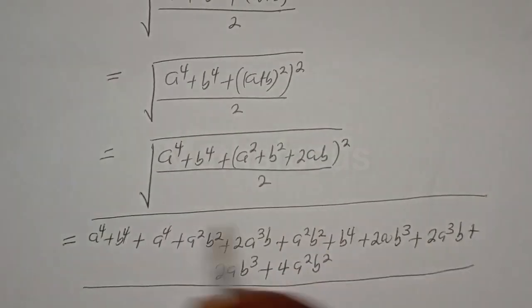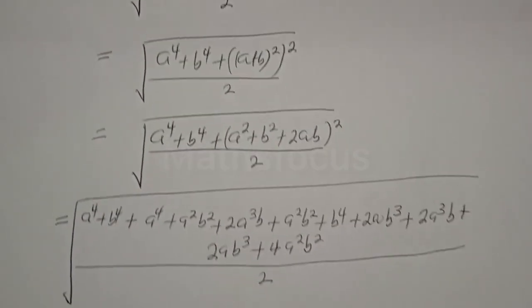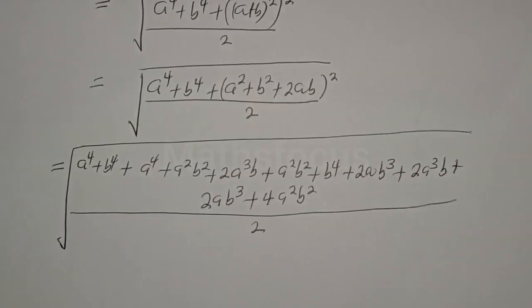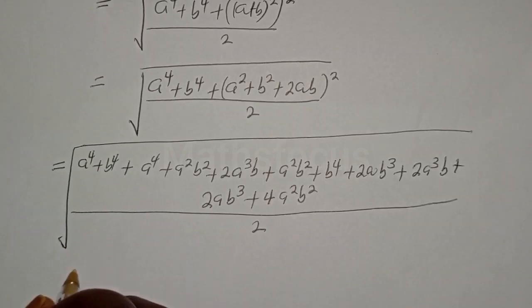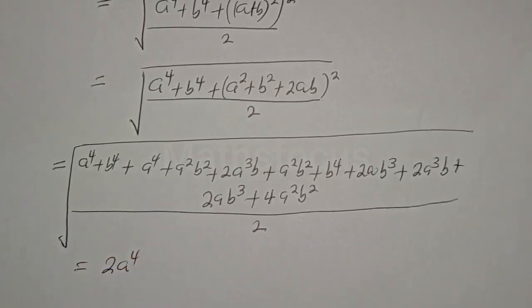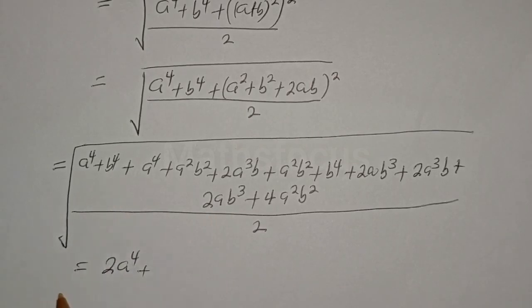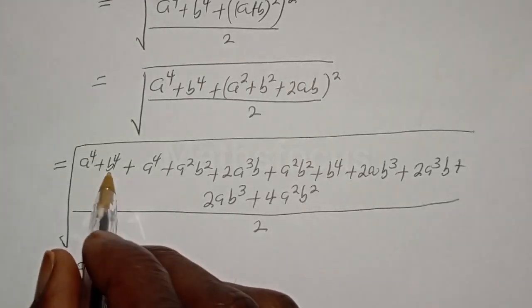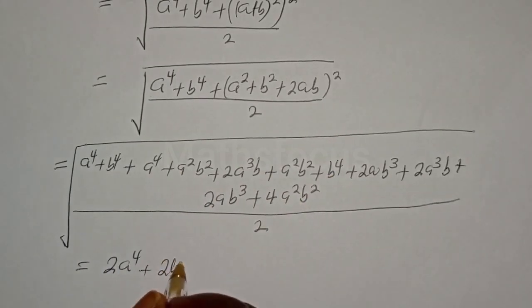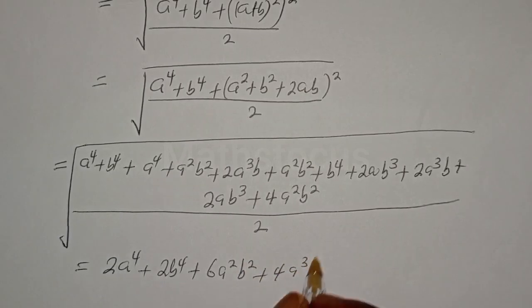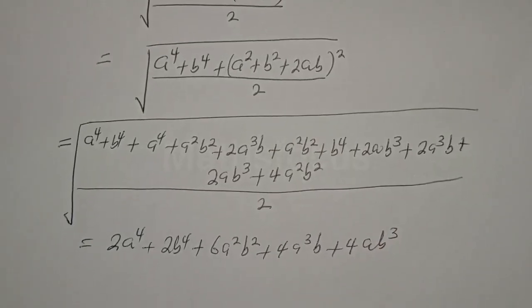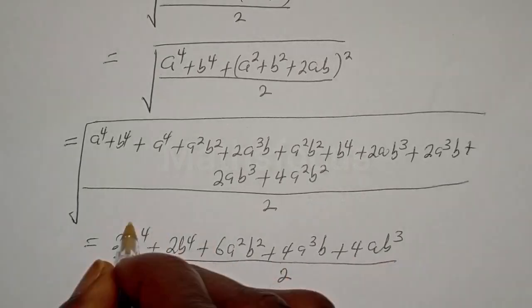From the full expansion we collect: 2a⁴ plus 2b⁴ plus 6a²b² plus 4a³b plus 4ab³, all over 2, then take the square root.